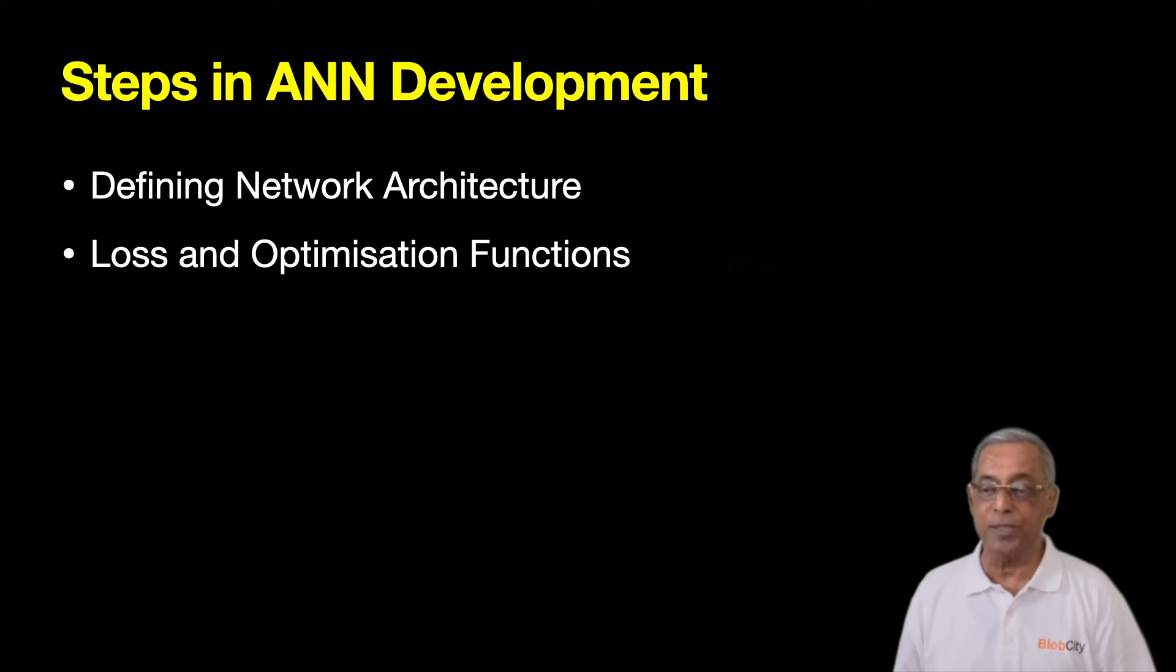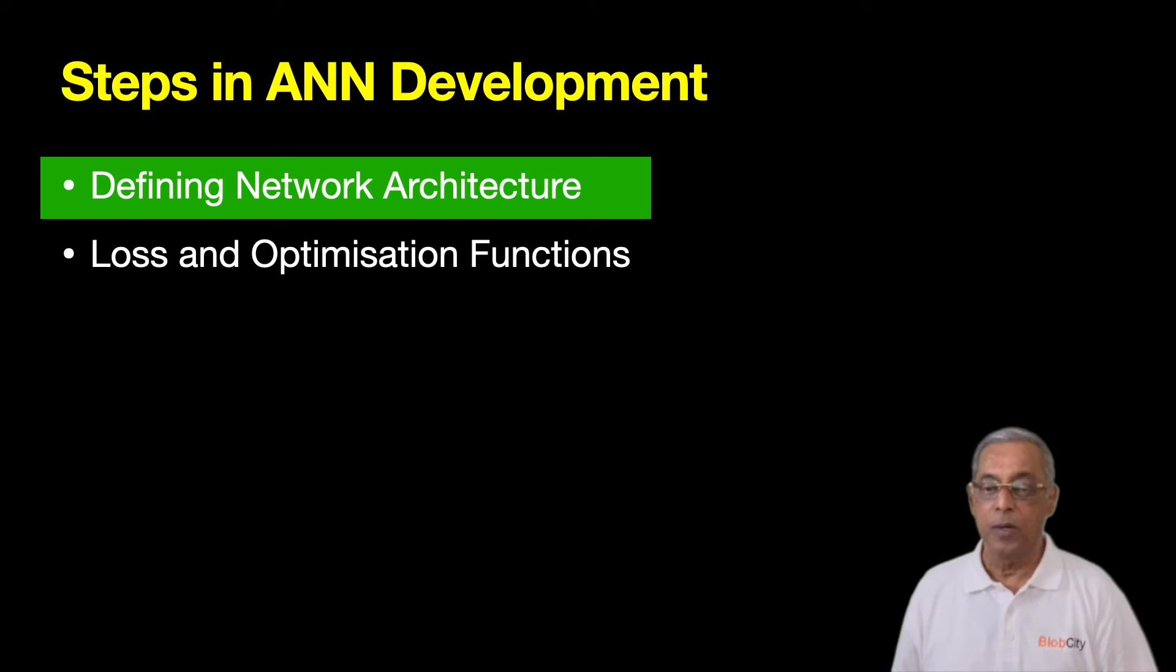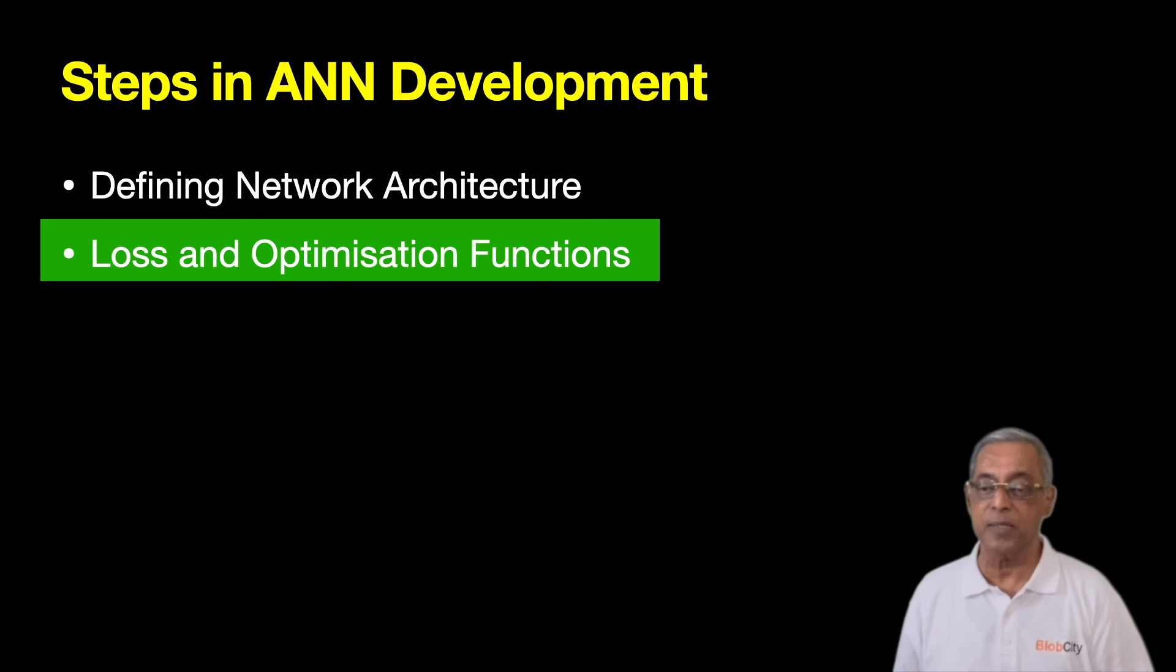These are the two major steps in ANN development. Your first task is to define a network architecture, which means to select the number of layers, the number of nodes in each layer, and the connection types between the layers. Next, you will need to decide on the loss and optimization functions to use for training the network.